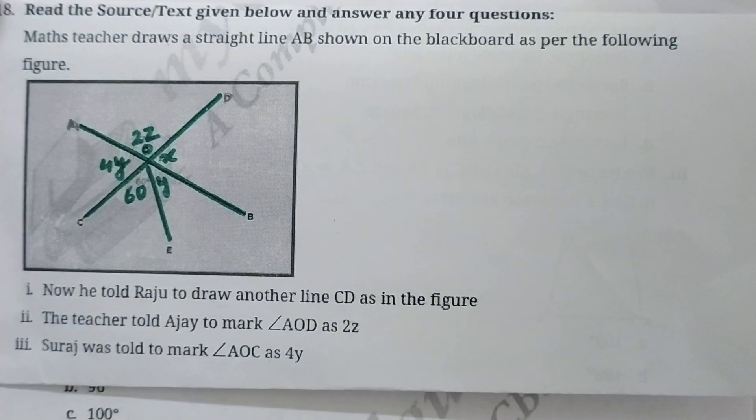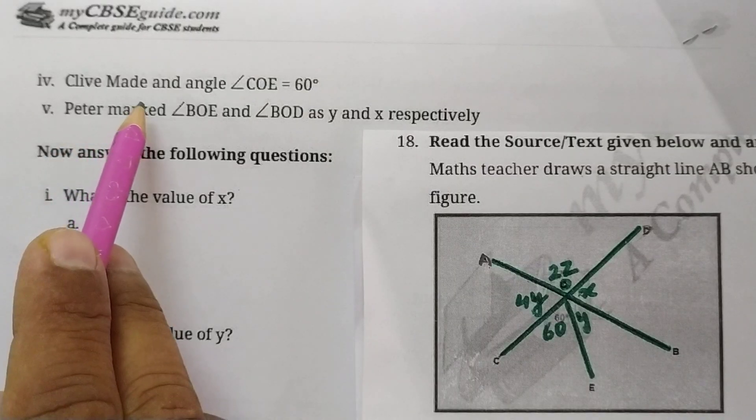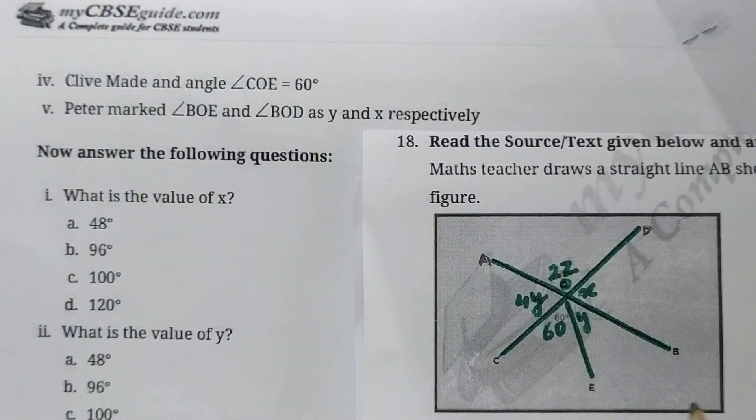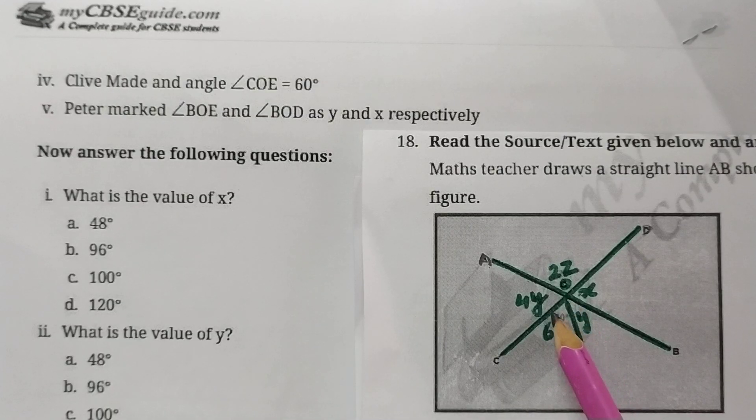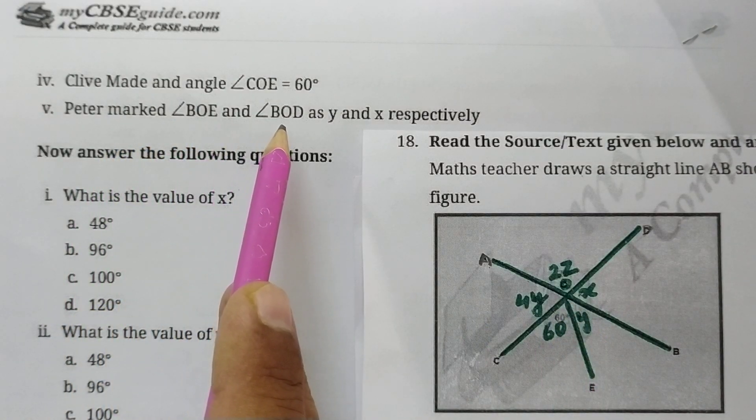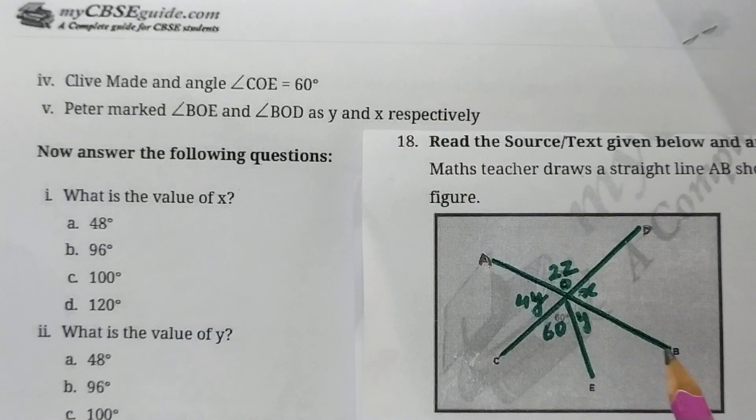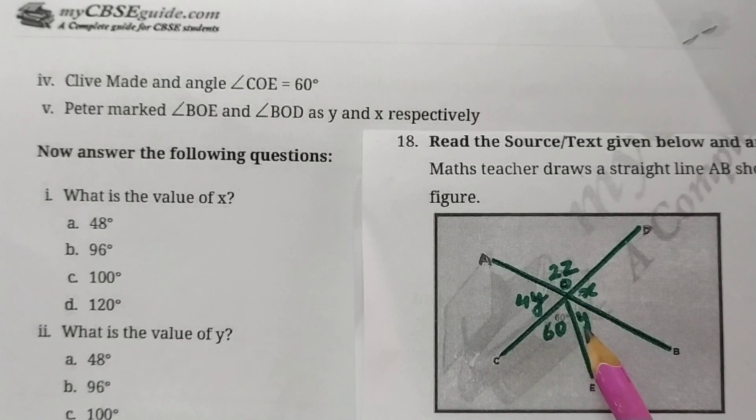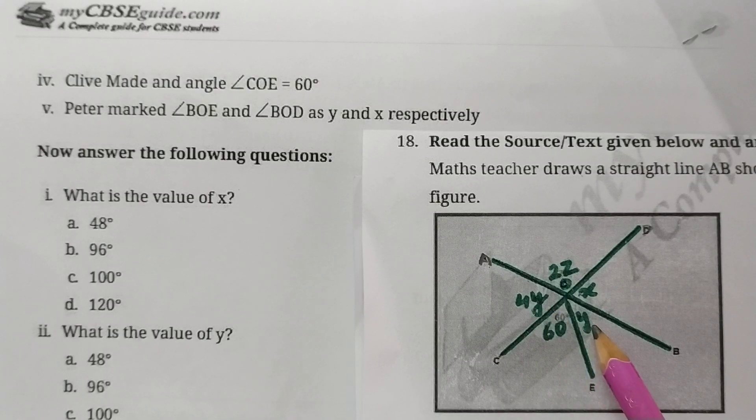Next, Clive made angle COE as 60 degrees. So this is angle COE, this is 60 degrees. Now Peter marked BOE and BOD angles as y and x. So BOD is x here and BOE is y here. So this is x, 2z, y, 60 degrees, and y, these all angles.